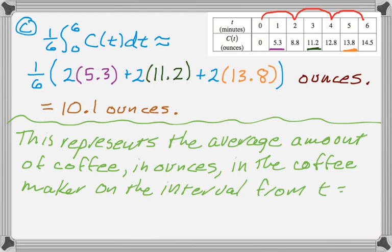In the coffee cup, on the interval from t equals 0 to t equals 6 minutes. But it's the average amount of coffee in ounces.